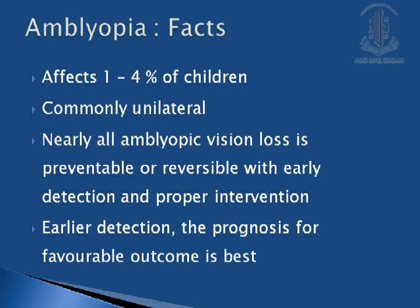Some common facts related to amblyopia are that it affects generally 1 to 4% of children. It is commonly unilateral. Nearly all amblyopic visual loss is preventable or reversible with early detection and proper intervention. The earlier the detection, the better the prognosis.